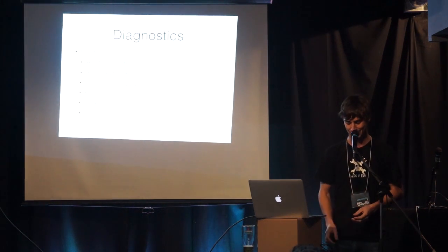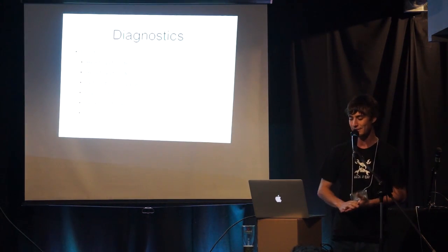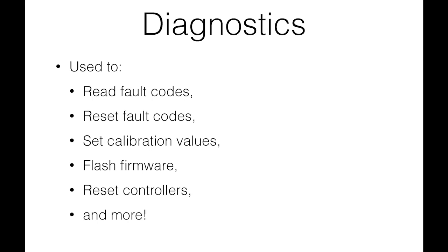The diagnostic side of CAN is also interesting. It's used to read fault codes, reset fault codes, set calibration values, and flash firmware. Calibration values could include your lookup table for your mass airflow sensor — the tuner crowd would know what I'm talking about. But you can also write to where your VIN number is stored on a controller, or write to where your odometer value is stored. That sounds scary.